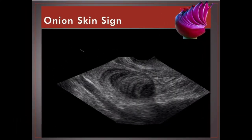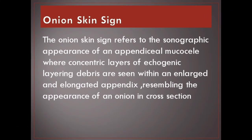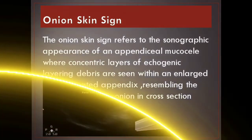Onion skin sign. It refers to the sonographic appearance of an appendiceal mucocele, where concentric layers of echogenic layering debris are seen within an enlarged and elongated appendix, resembling the appearance of an onion in cross-section.